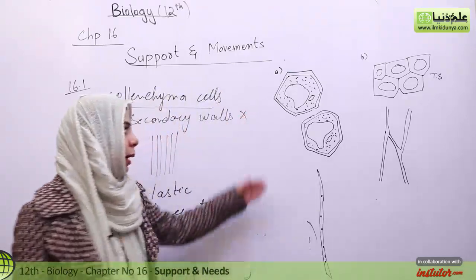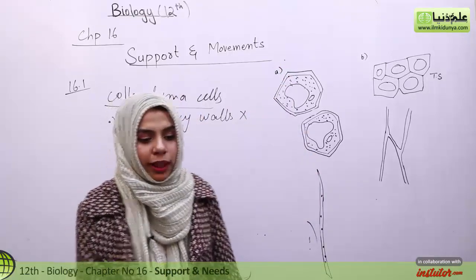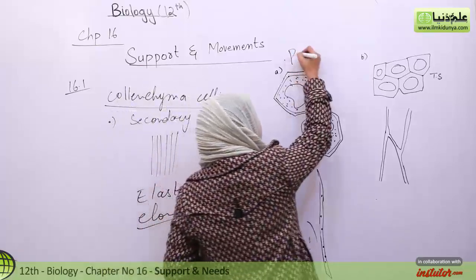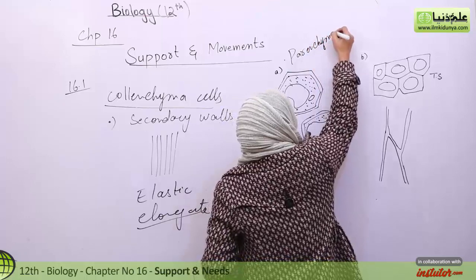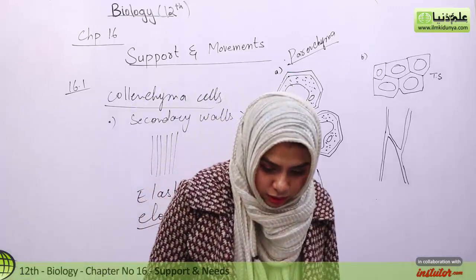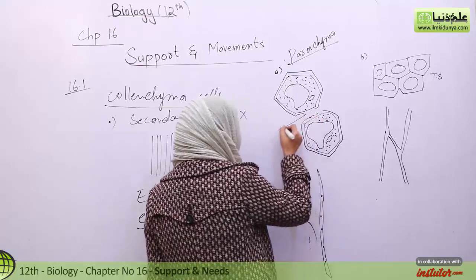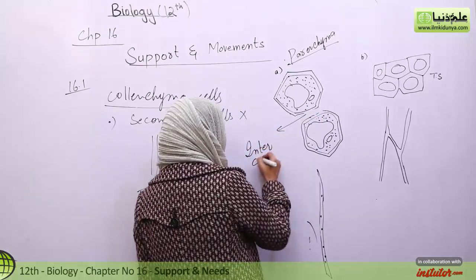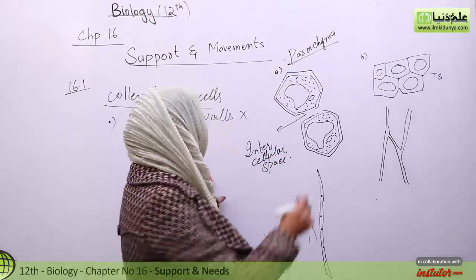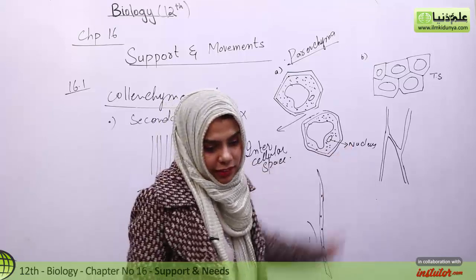If you look at the diagrams on the left side which you will see in the book, the first one is parenchyma — the parenchyma cells are more or less hexagonal in shape. In the middle there is a space known as intercellular space. The rounded structure in the middle is known as the nucleus.